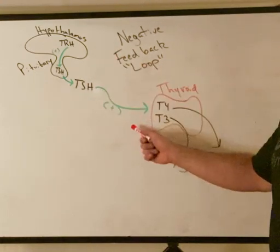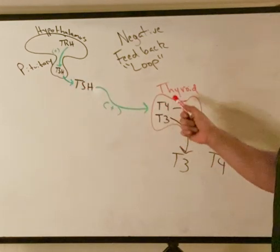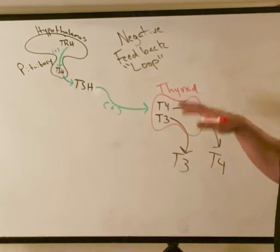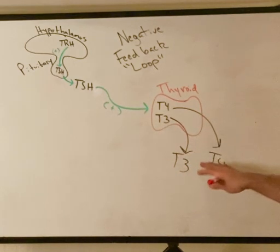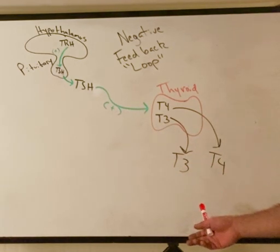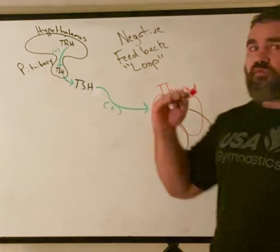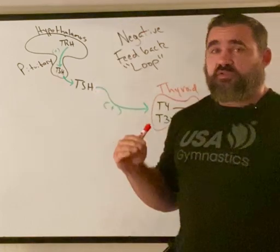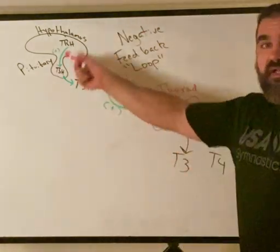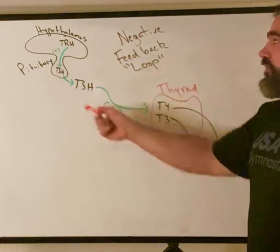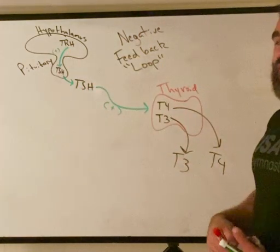We have positive arrows — green lines — because each step stimulates the next. Now, we need to regulate the amount of thyroid hormone, especially T3, which regulates our whole body's metabolism. So how do we make sure T4 and T3 don't get too high or too low? We have to regulate these stimulations of the thyroid gland, and we do that through negative feedback.